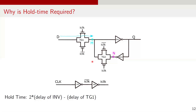Now let's discuss why we need hold time in a latch. If the input data D changes too quickly after the clock signal goes low, transmission gate TG1 is not yet fully turned off and the new value of D might pass through TG1, corrupting the value stabilized at node N. Therefore, data input D must be stable for a certain duration after the clock transitions low until TG1 is fully turned off. The required hold time equals 2 times the delay of inverter INV minus the delay of transmission gate TG1.